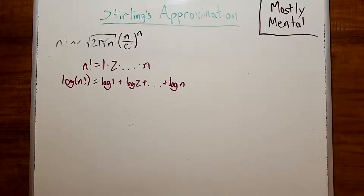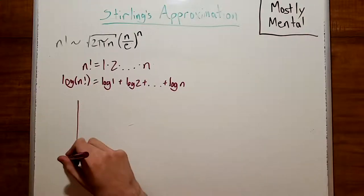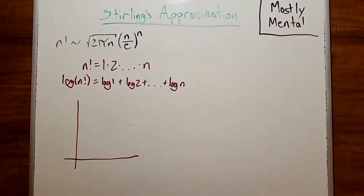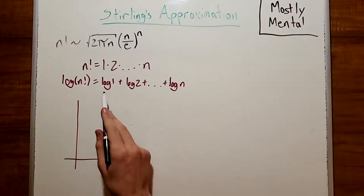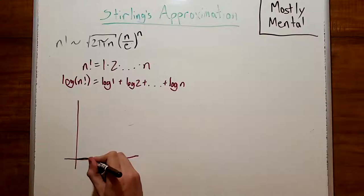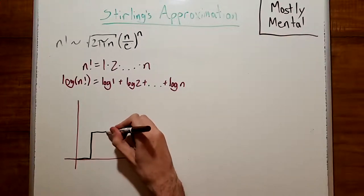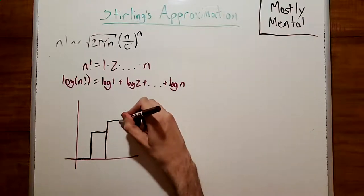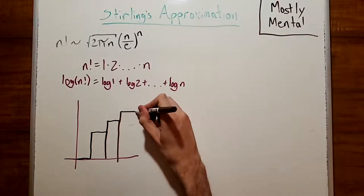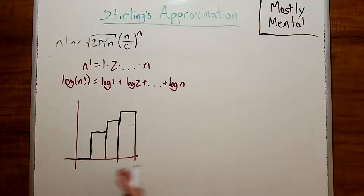We can interpret this sum geometrically as the area inside a sequence of rectangles. The width of each rectangle is going to be 1, and the height is going to be the log of the right endpoint. So, this first one here will have height log of 1, which is 0, and then the next one will have height log of 2, and then log of 3, and log of 4, and so on and so forth.